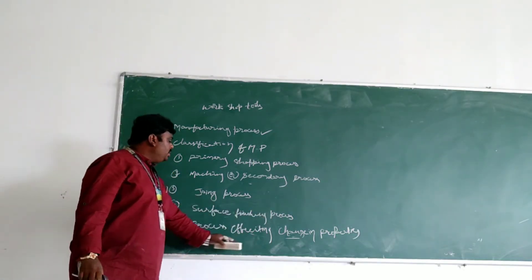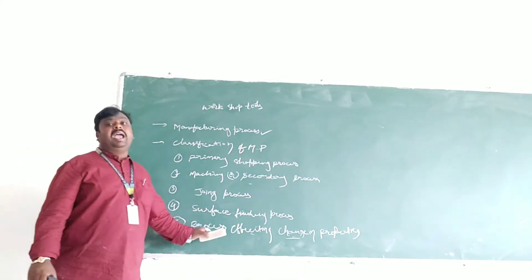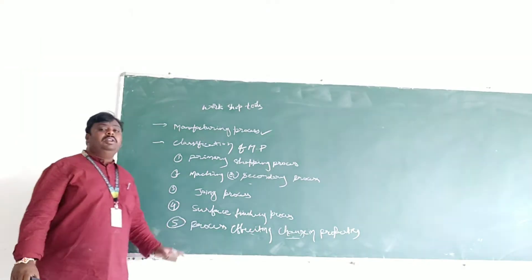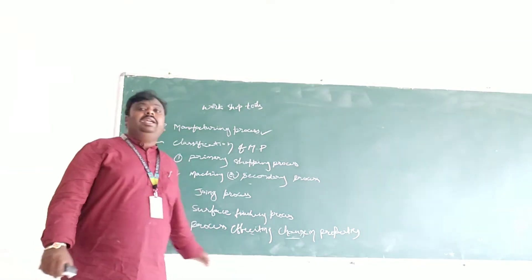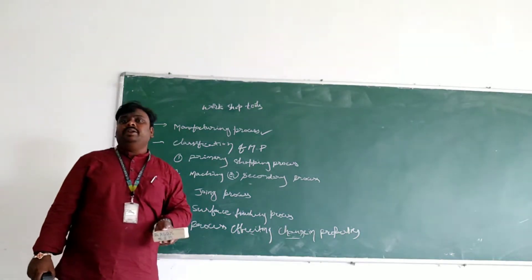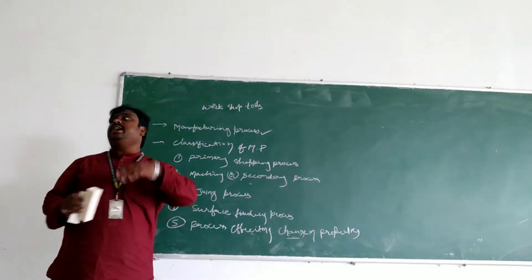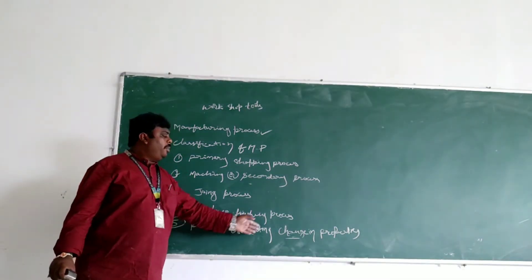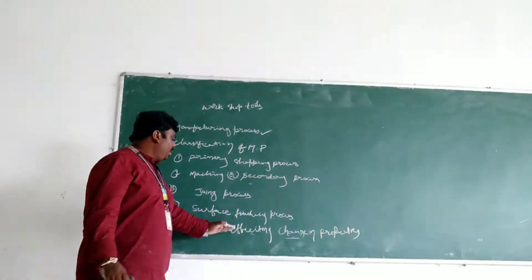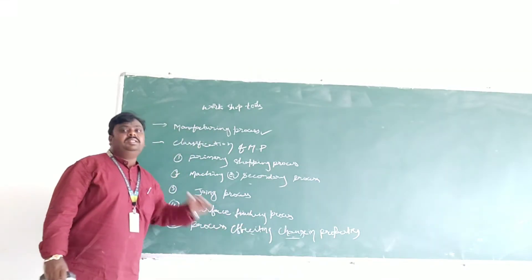Also the effective change in the properties - you can do the heat treatment process. These are iron material purposes. When taking the iron material, you can do the heat treatment analysis methods. The hardness of the metal is there - if you leave it, the hardness will be low. If you are increasing the hardness, better you can do the primary process of effecting change in the properties - you can do the heat treatment process. Automatically the material properties will be changed.